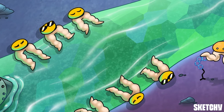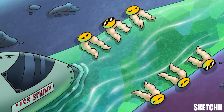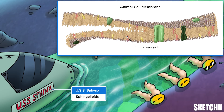And that brings us to the last major category of lipid in the cell membrane: sphingolipids. The cruise ship is called the Sphinx to remind you of sphingolipids. Like phospholipids and cholesterol, they have a hydrophilic head and a hydrophobic tail. The type and quantity of sphingolipids present in a membrane depends on the type of cell, but the details aren't important for now.